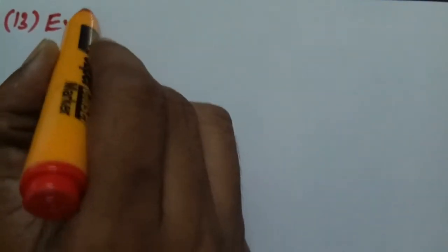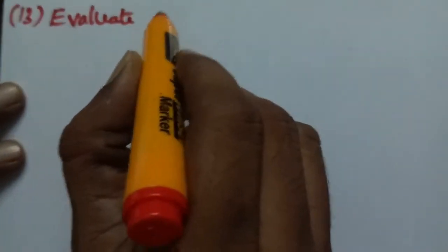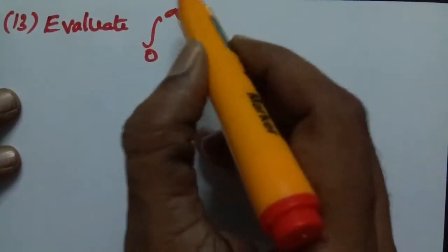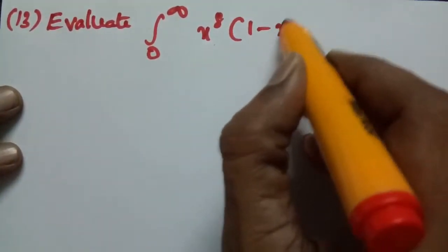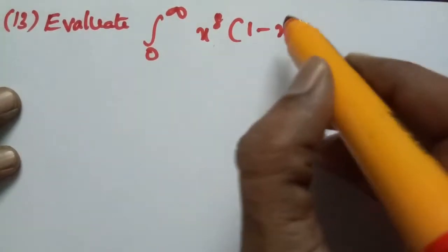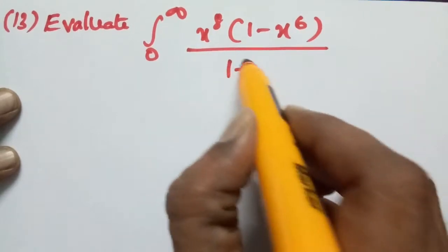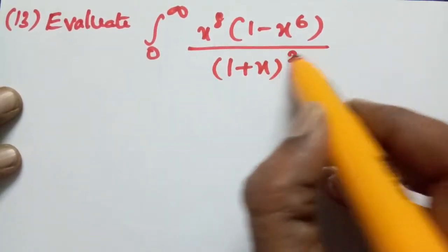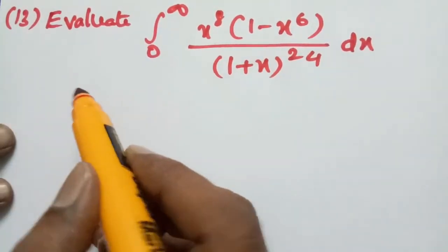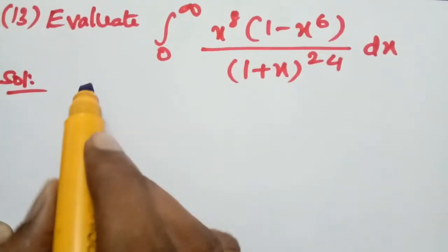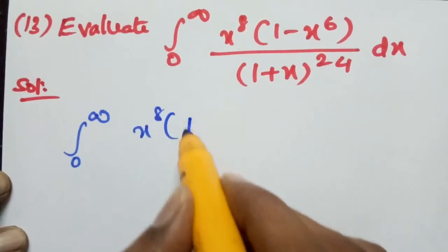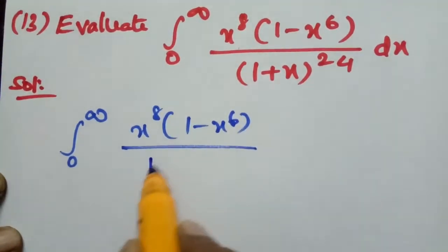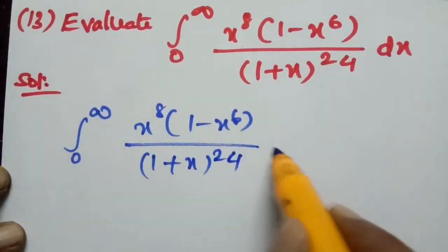Problem number 13: evaluate the integral from 0 to infinity of x to the power 8 times (1 minus x to the power 6) to the power 4, divided by (1 plus x) to the power 24, dx.